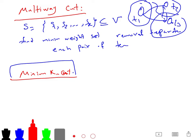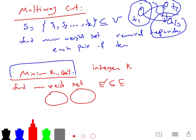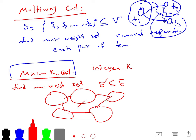Minimum K-cut is less restricted — it's a weaker approach because you don't know your terminals at the start. Given an integer K, the problem is to find a minimum weight set of edges whose removal divides the graph into K connected components: 1, 2, 3, ..., K of them. These are different notions.